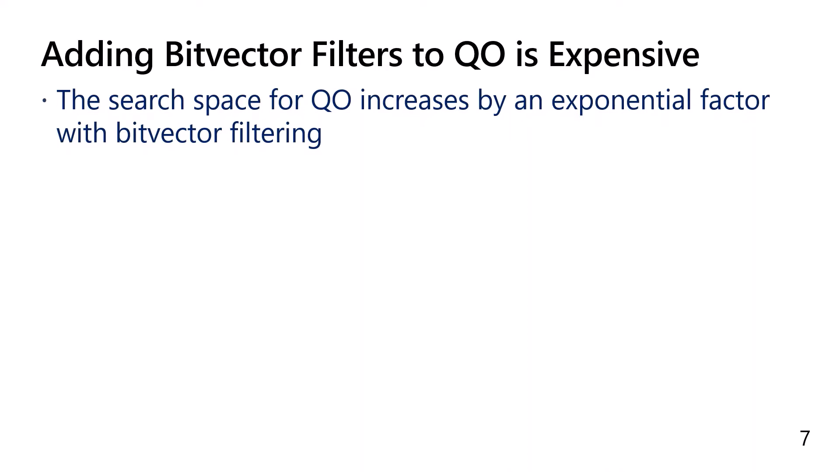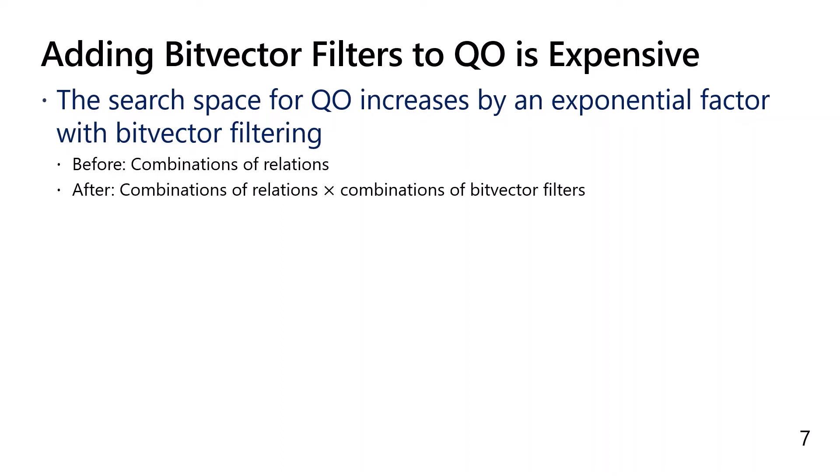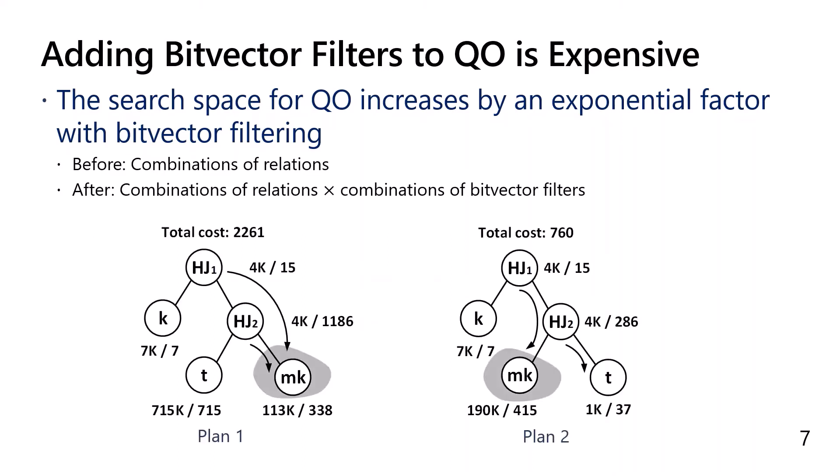At a high level, when there is no bitvector filtering, we only need to figure out the best subplans for each combination of relations. With bitvector filters, we must also cross-product the combinations of bitvector filters. Looking at the base relation MK in both plans: in a world without bitvector filters, MK is the same in two plans. However, with bitvector filters, a different combination of bitvector filters is pushed down to MK, so the number of tuples from MK differs between the two plans. Thus, they are not equivalent anymore.